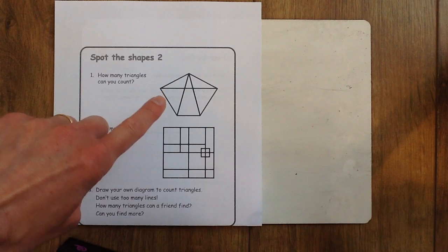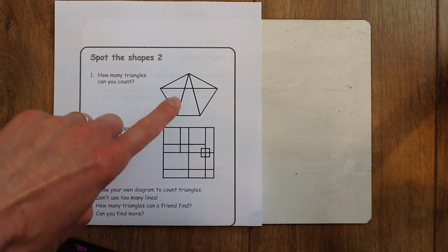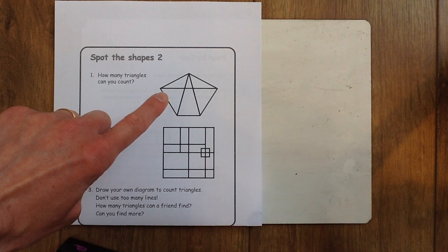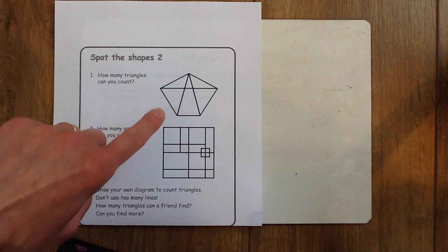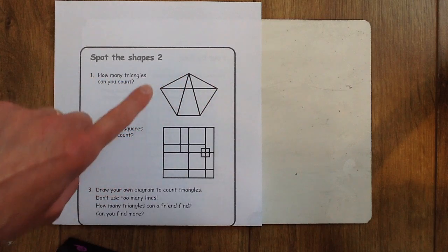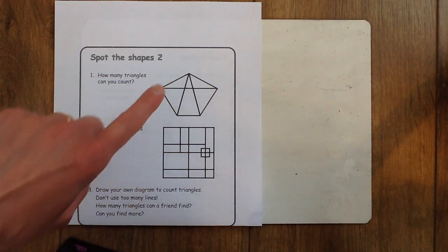So you might like to start by the ones that you can see. So here is one triangle. The triangles can be any type of triangle. You're trying to spot how many there are in total in the whole picture.